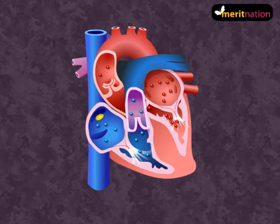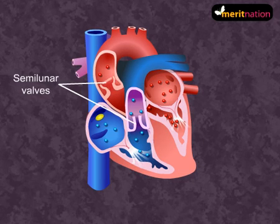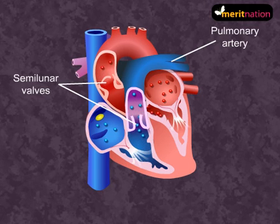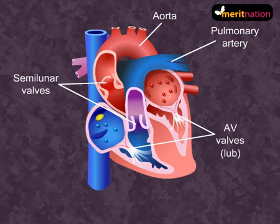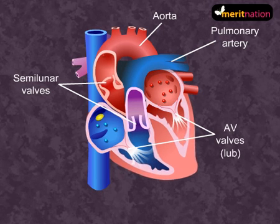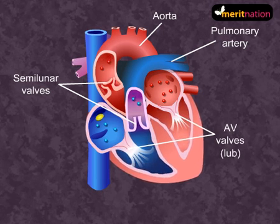This continuous contraction causes a further increase in ventricular pressure, which opens the semilunar valves and the blood flows into the pulmonary artery and the aorta. The closing of the AV valves results in producing the first heart sound, 'lub.' The ventricles are now in a relaxed state.